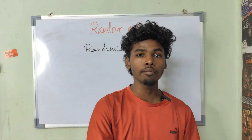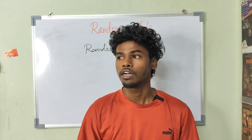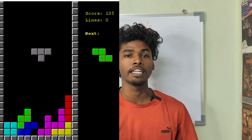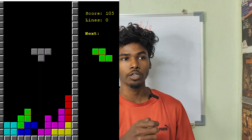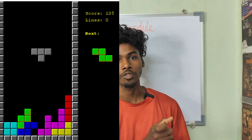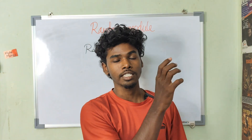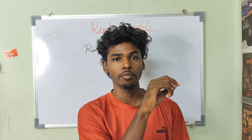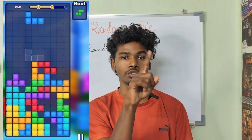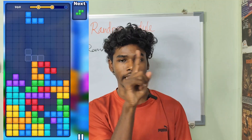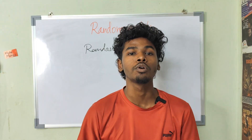Randomization means we will land in a game. Let's say, for example, the Tetris game. Sometimes we have a T shape, L shape, square shape, and rectangle shape. So that is randomization.